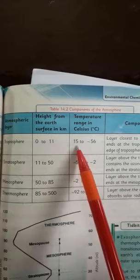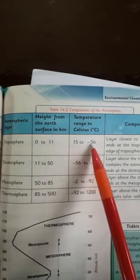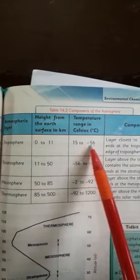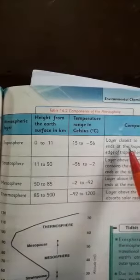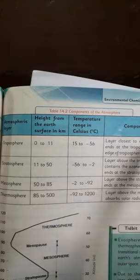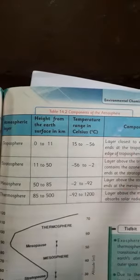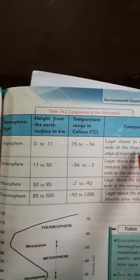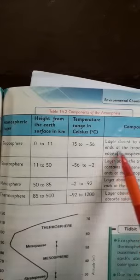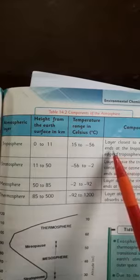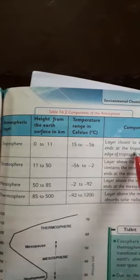The temperature range in troposphere is 15 degrees centigrade to minus 56 degrees centigrade — temperature decreases with height, so it shows a negative lapse rate. It is the layer closest to Earth's surface and ends at the tropopause — which is the upper edge of the troposphere.